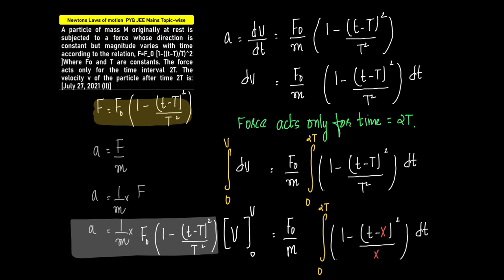We need to find velocity. Acceleration can be written as dv/dt, so dv/dt = (F₀/m) × (1 - (t - T)²/T²). Taking dv to the left-hand side and transposing dt to the right-hand side: dv = (F₀/m) × (1 - (t - T)²/T²) dt.